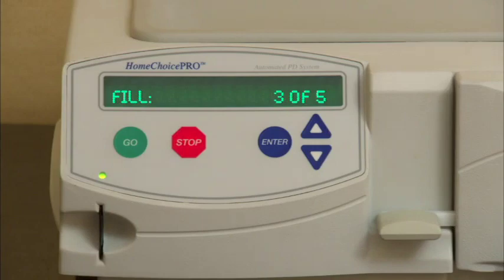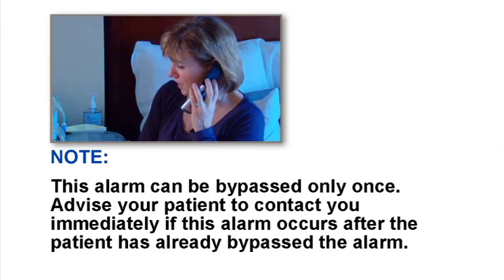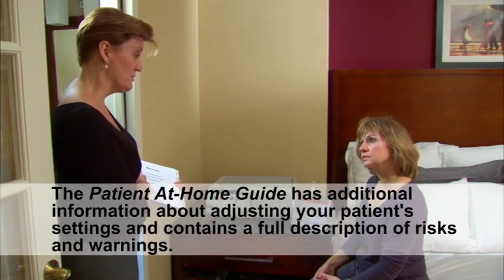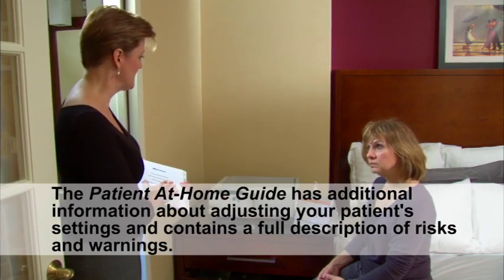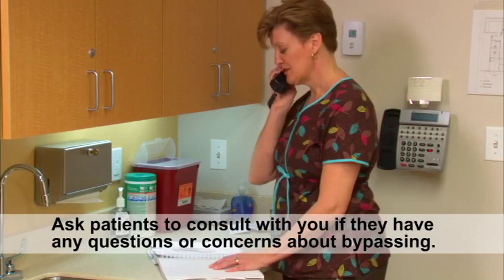The next fill begins and the fill number is displayed on their screen. Note: this alarm can be bypassed only once. Advise your patient to contact you immediately if this alarm occurs after the patient has already bypassed the alarm. Warning: bypassing a caution negative UF alarm can leave fluid in the peritoneal cavity and create an increase in intraperitoneal volume, or IIPV. IIPV could result in a feeling of abdominal discomfort, serious injury, or death. The Patient at Home Guide has additional information about adjusting your patient's settings and contains a full description of risks and warnings. Please review this guide for complete information. Ask patients to consult with you if they have any questions or concerns about bypassing.